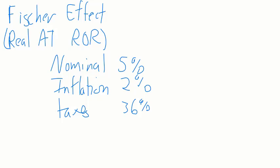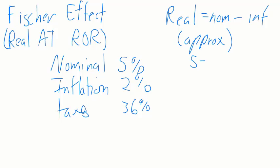If you're dealing with your real rate of return, not your after-tax real rate of return, but just your real rate of return, the approximation is just nominal minus inflation. And again, this is an approximation. So your real rate of return would just be 5 minus 2 equals 3%.